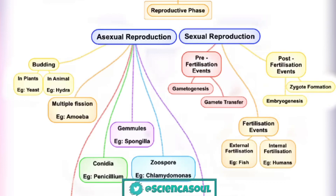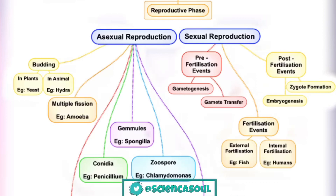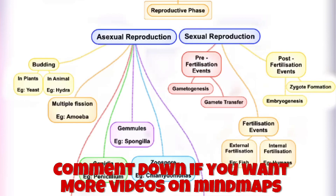Post-fertilization events consist of two parts: zygote formation and embryogenesis. Formation of the diploid zygote is universal in all sexually reproducing organisms. In organisms with external fertilization, the zygote is formed in the external medium, which is usually water. The zygote is the vital link that ensures continuity of species from one generation to the next.